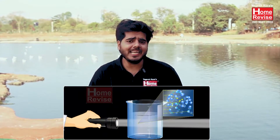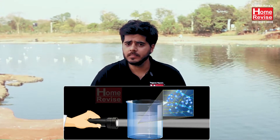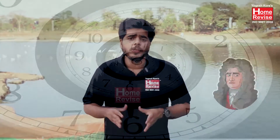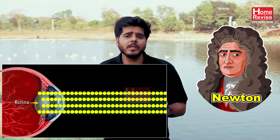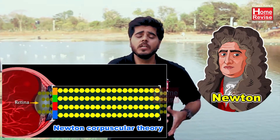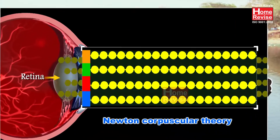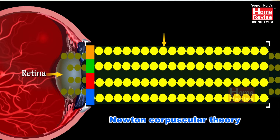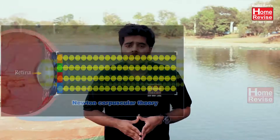But how exactly does light travel? Years ago Newton postulated a theory called Newton's corpuscular theory. In that theory he said that light travels in the form of tiny little particles and he named these particles as corpuscles.